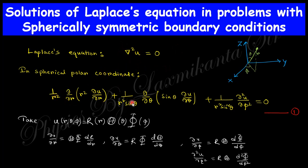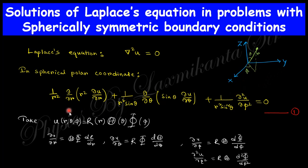The del-squared operator in spherical polar coordinates can be written accordingly. From the method of separation of variables, there are three variables: R (the radial distance), theta (the angle with the z-axis), and phi (the projection angle with the x-axis). You take the partial derivatives with respect to R, theta, and phi and substitute them into the Laplace equation.